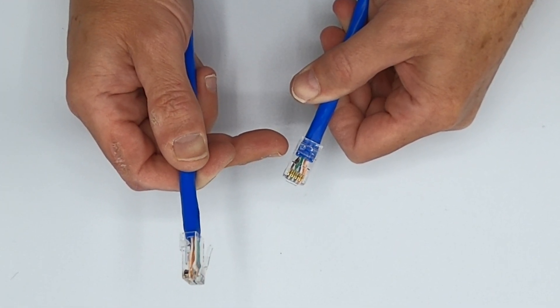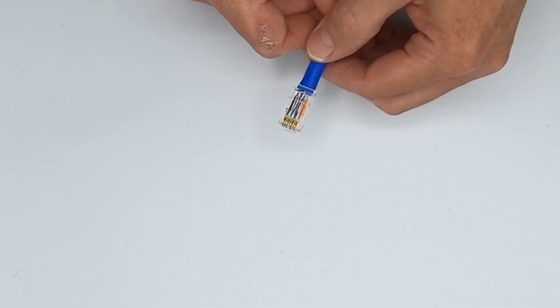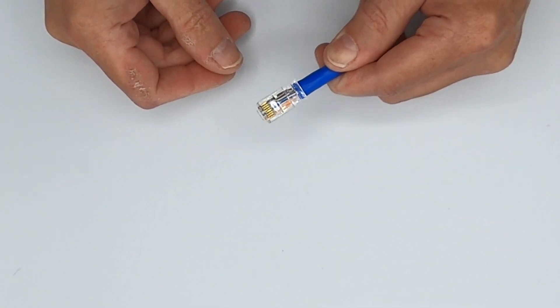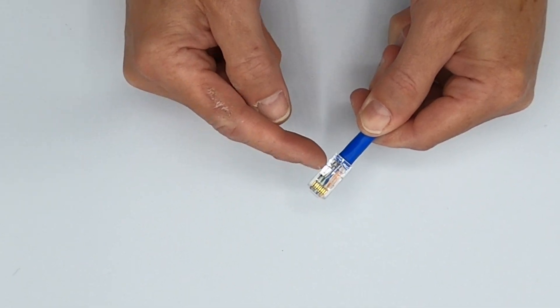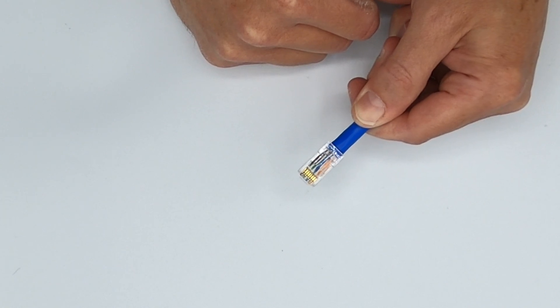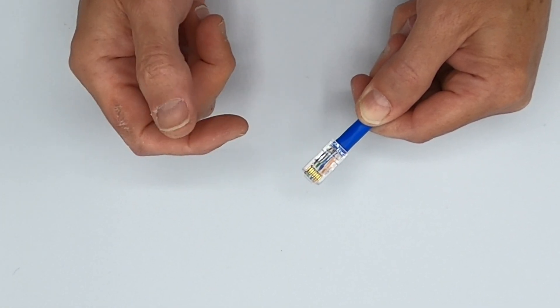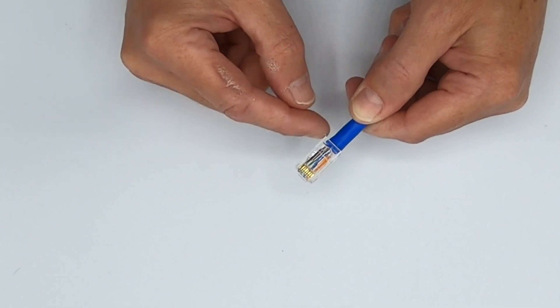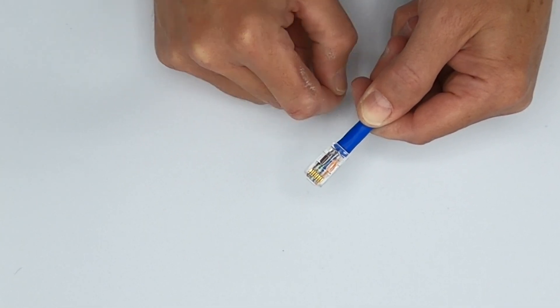You're going to get your one gigabit or your 10 gigabit. However, if you were to not properly terminate the plug and these conductors were untwisted too far - and this is a great example of that - this is probably going to give you a 100 megabit per second connection. If the cable jacket wasn't even inside the plug, it may not even work at all.